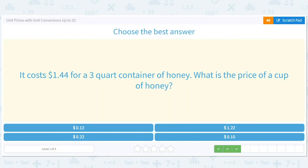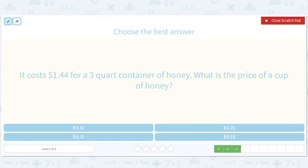$1.44 for three quarts. So 144 divided by three is 48 cents. What is the price per cup? So now you do 48 cents divided by four and you get 12 cents.